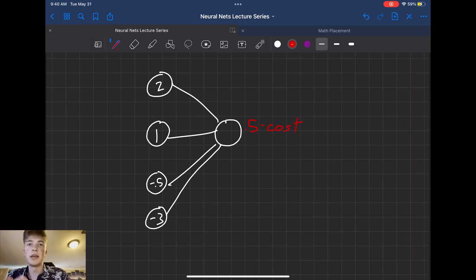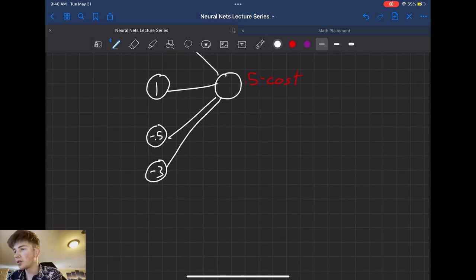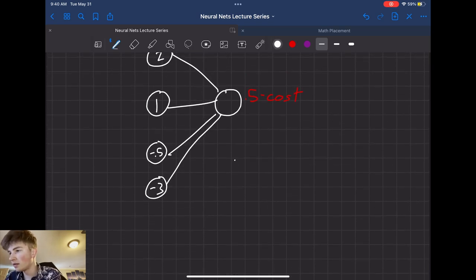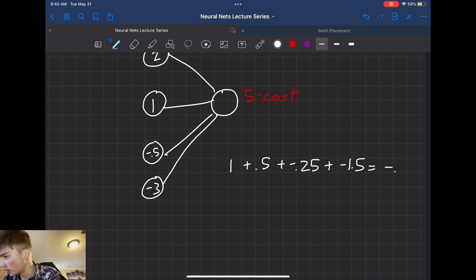So all we need to do is get a dot product of our cost value and our previous layer. So that's going to result in... We multiply these together. So we get 1 plus 0.5 plus negative 0.25 plus negative 1.5. So the resulting value is going to be negative 0.25.